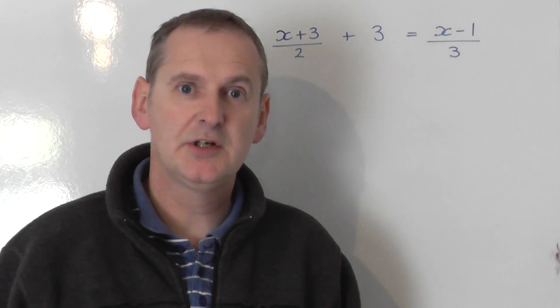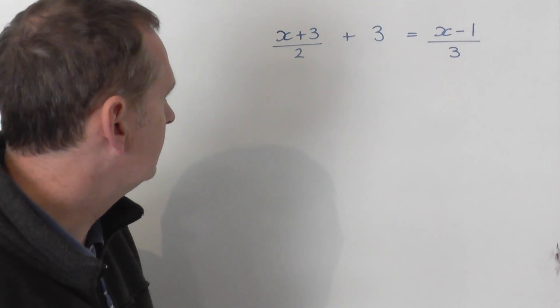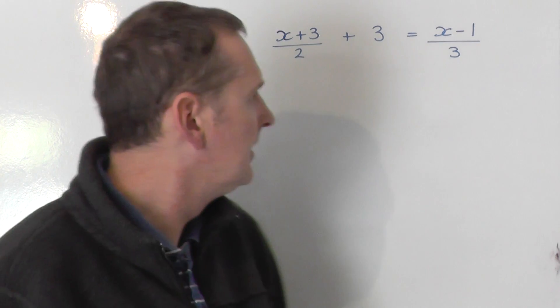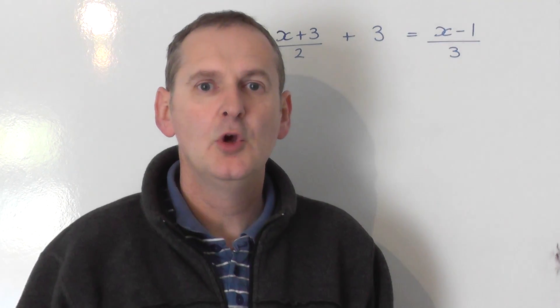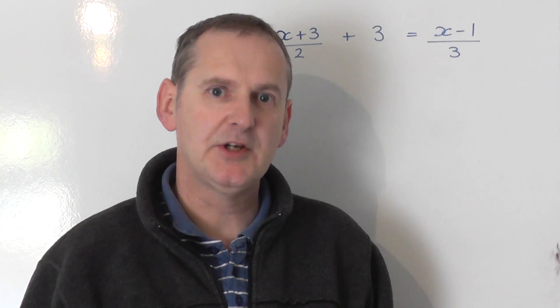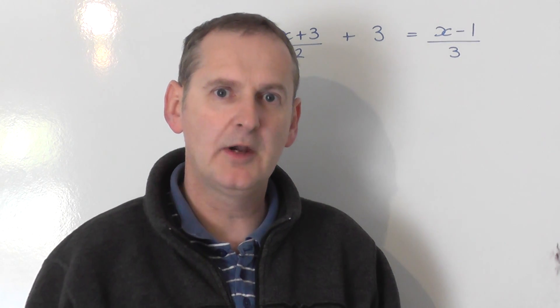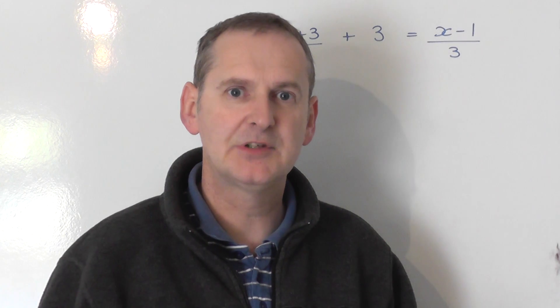Let's solve the equation x plus 3 all over 2 plus 3 is equal to x minus 1 all over 3. This particular equation is awkward for two reasons. One of them might be obvious and one of them perhaps less obvious.